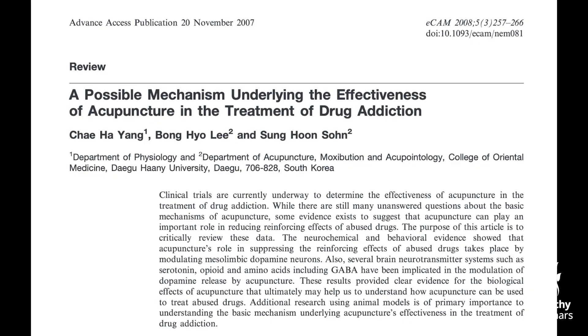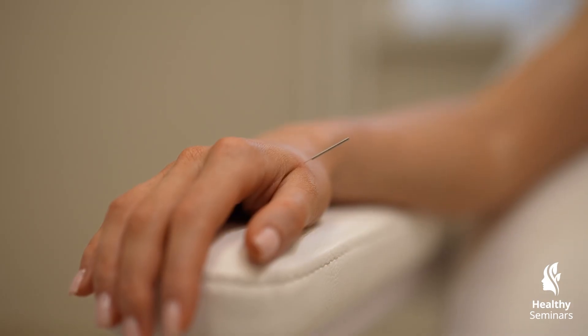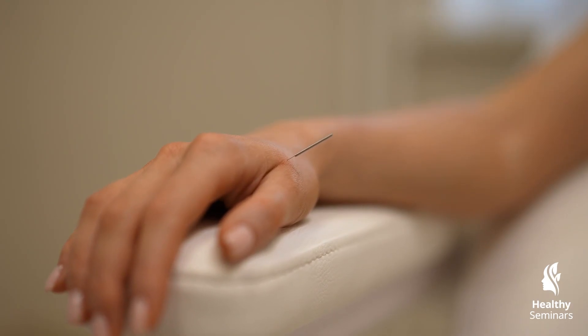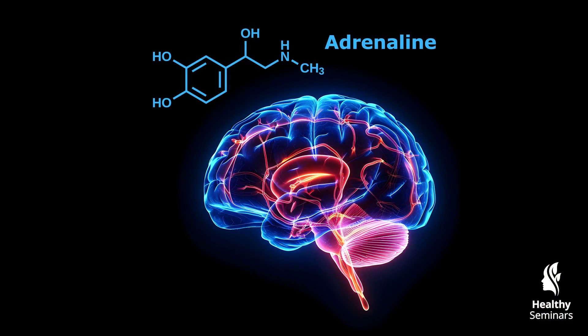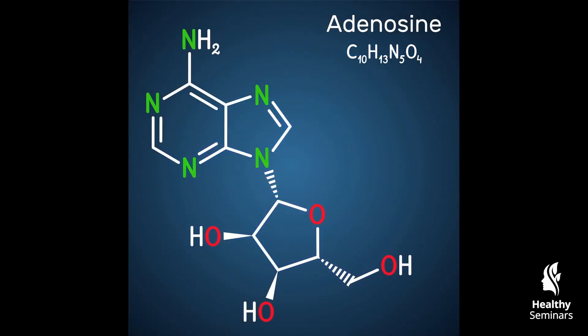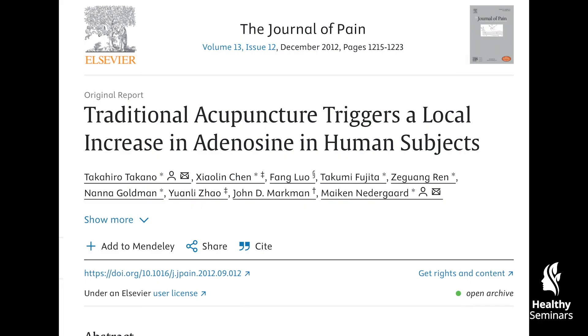This is why acupuncture has been found to be effective in treating conditions such as anxiety, depression, and stress-related disorders. Additionally, acupuncture with Qi arrival has been shown to regulate norepinephrine and GABA, further balancing the autonomic nervous system. Another important biochemical effect is the release of adenosine, a neuromodulator with potent anti-inflammatory and pain-relieving properties.